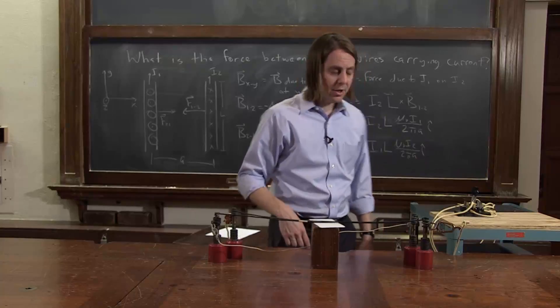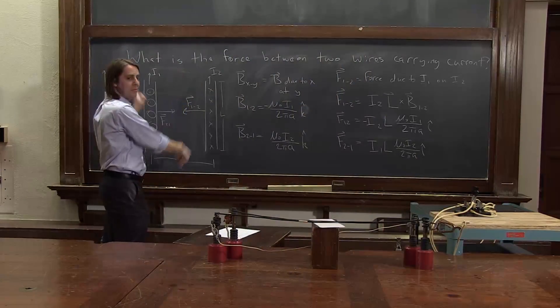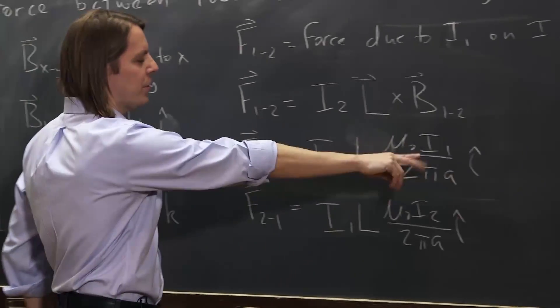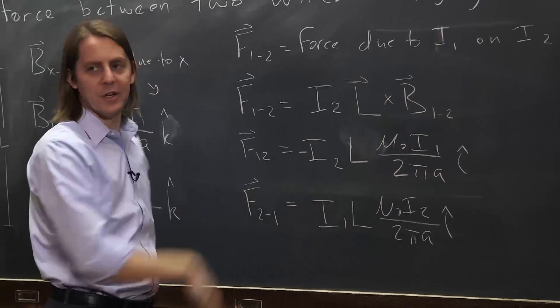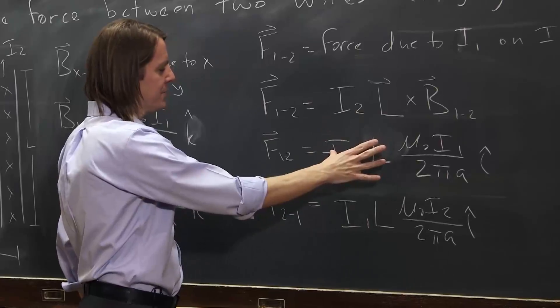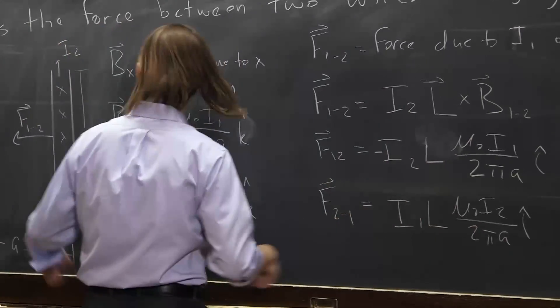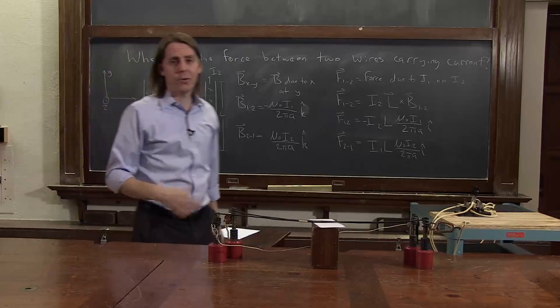Now, you could ask, what if we had the current going opposite ways? Well, you could look at this and maybe figure it out. Really, what you're talking about doing is flipping the sign of one of these currents. Say we flip the sign of I2. Then what would happen? Well, if we flip the sign of I2, suddenly this one would be positive. This wire would feel positive force and this one would be negative. This wire would feel a negative force. If you flip the sign of one of the currents, it makes the force become repulsive.